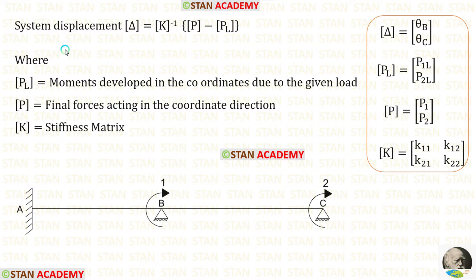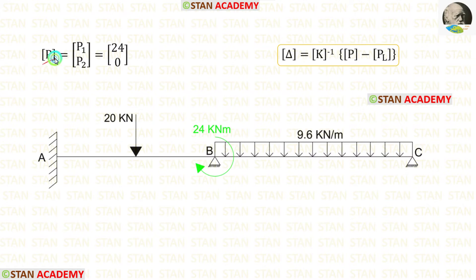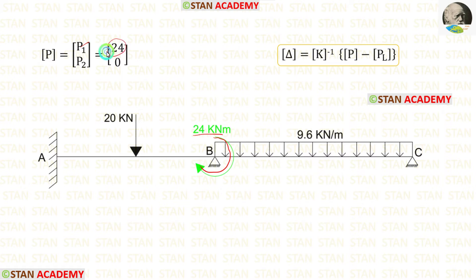We know the formula to find the slope values: the delta matrix equals K matrix inverse times (P matrix − PL matrix). In this formula, first let us find the P matrix. To find P1 we check the first coordinate at point B — there is a couple moment of 24 kNm acting clockwise, so P1 is positive 24. To find P2, we check the second coordinate at point C — there is no moment, so P2 is 0.